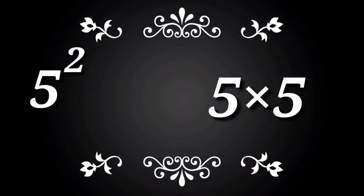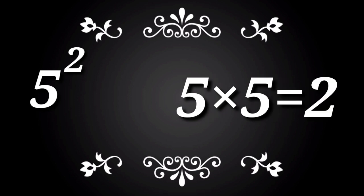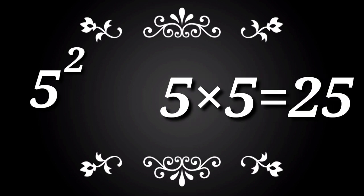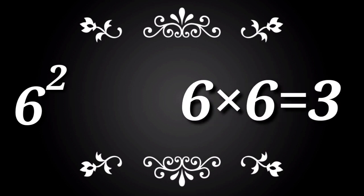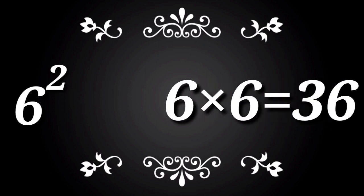5 square. 5 into 5 is equal to 25. 5 5s are 25. 6 square. 6 into 6 is equal to 36. 6 6s are 36.